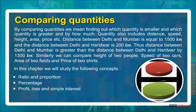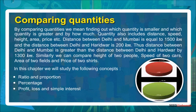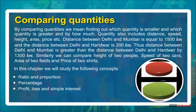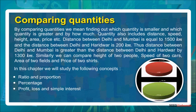By comparing quantities, we mean finding out which quantity is smaller, which is greater, and by how much. Quantity also includes distance, speed, height, area, price, etc. The distance between Delhi and Mumbai is equal to 1500 kilometres.